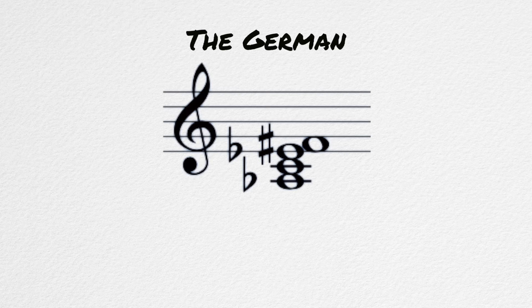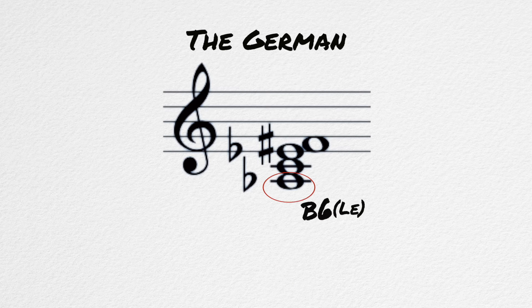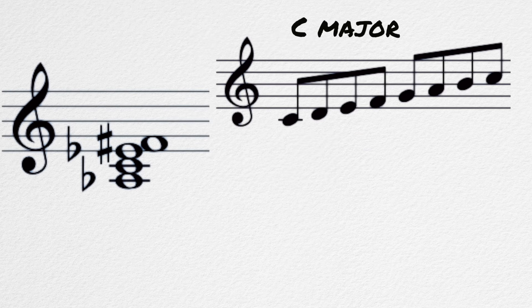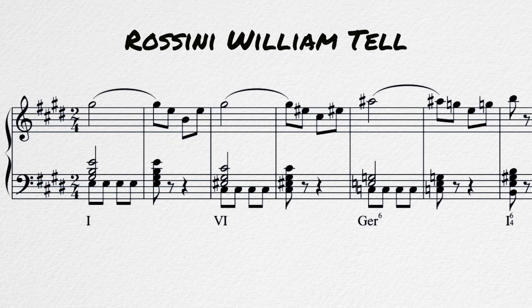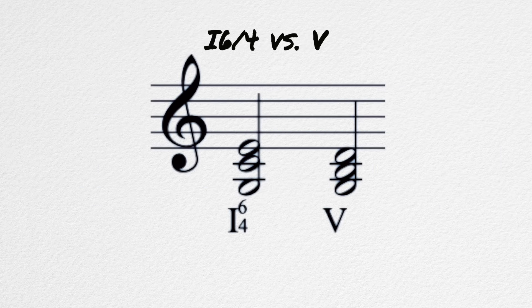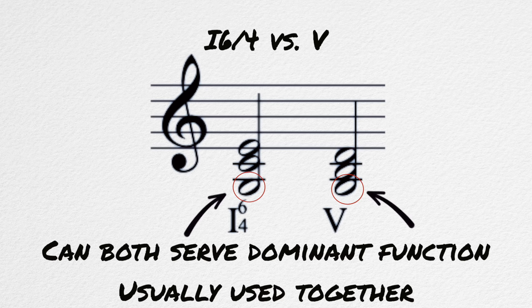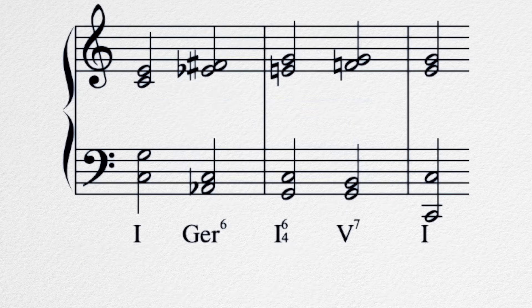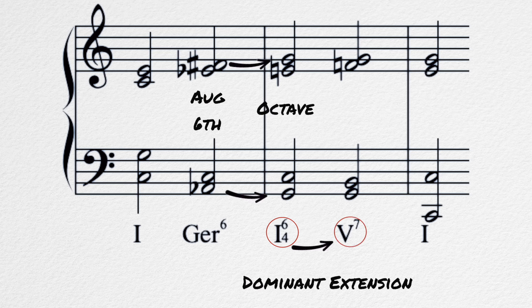The third type is the German augmented sixth. It has the same notes as the Italian sixth with an added flat three — it does not contain the second degree that the French sixth does. In C major: A flat, C, E flat, F sharp. An example can be found in the Rossini William Tell Overture. Here in the key of E major, we start with a one chord, move to a C sharp major chord (a chromatic median), and are then hit with the German augmented sixth. This chord resolves to a one-six-four chord, which has scale degree five in the bass and dominant function. Sometimes augmented sixth chords resolve to this chord before heading to the five chord to avoid parallel fifths.